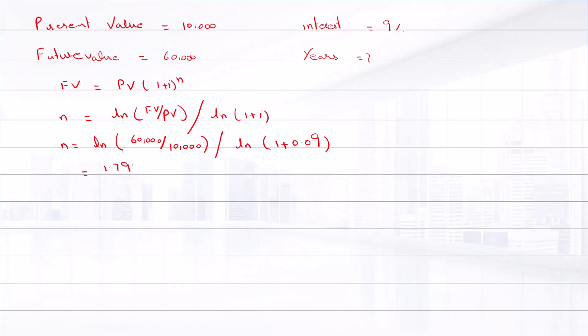That is equal to 1.791 divided by 0.0862. That is equal to 20.79.